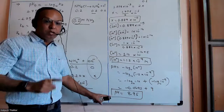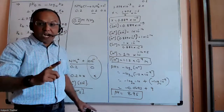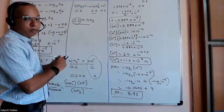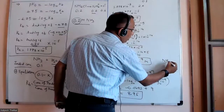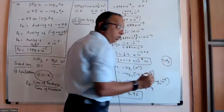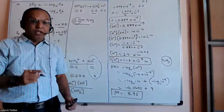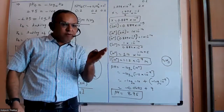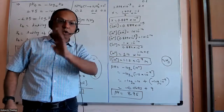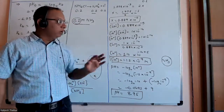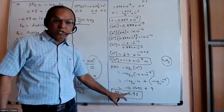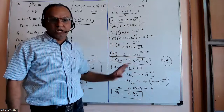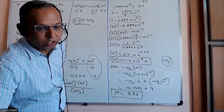The pH we obtain is 8.95, approximately 9. Our substance is ammonia NH3, which is a weak base, and weak bases have a pH value in the range of 7.01 to 10. So our answer is close to the standard values and is therefore correct. I think you got it. Thank you.